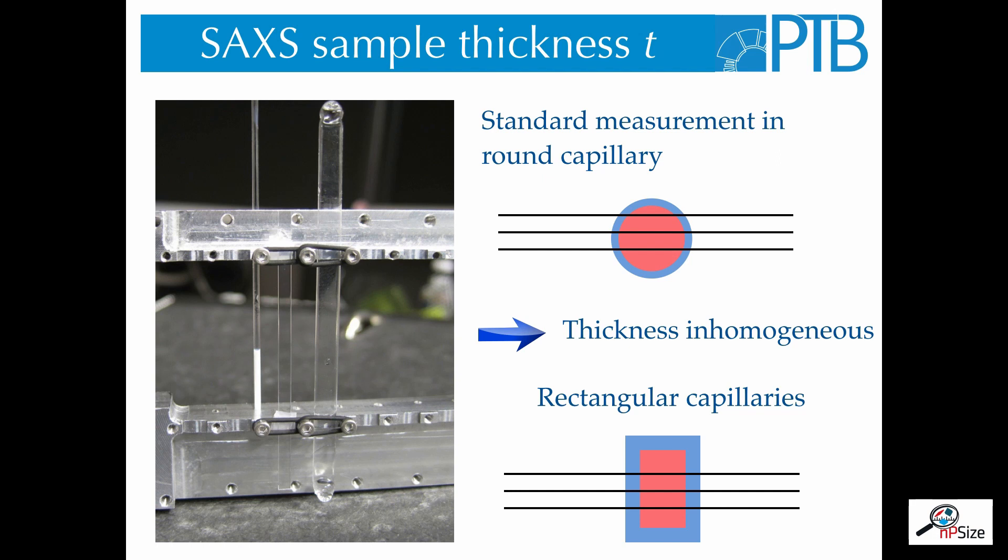The sample thickness is the optical path of the X-ray beam through the sample, the length of the optical path. Usually, we measure in round capillaries and there the optical path is not constant across the beam for the whole width of the beam. If we want to determine absolute units, we therefore use rectangular capillaries, where the sample thickness is constant over the whole beam.